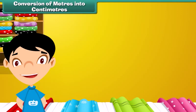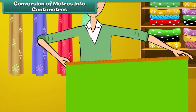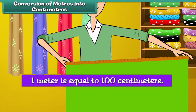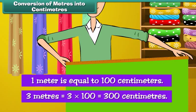Conversion of meters into centimeters. It is time to understand the relationship between meters and centimeters, and then convert meters into centimeters. One meter is equal to 100 centimeters. Therefore, three meters is equal to 3 into 100, which is 300 centimeters.